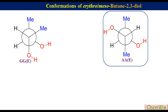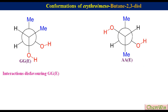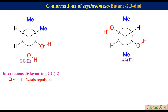There are two important interactions that disfavor the GGE conformation: the first is van der Waals repulsive interaction between the two methyl groups, and the second is repulsion between the lone pairs of the two oxygen atoms. These two interactions are absent in the AAE conformation due to the anti orientation of these groups.